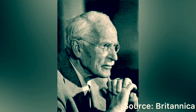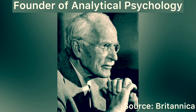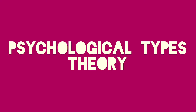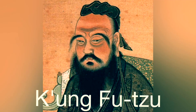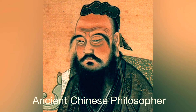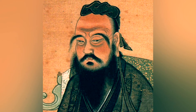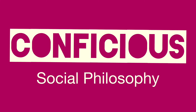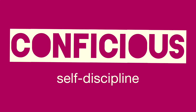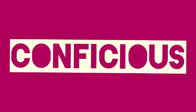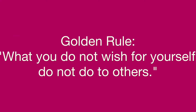Carl Jung. He's the founder of analytical psychology, who developed a theory of psychological types designed to categorize people in terms of various personality patterns. Confucius, also known as Kung Fu Tzu, is an ancient Chinese philosopher whose beliefs and teachings are akin to a religion. His social philosophy was based primarily on the principle of loving others while exercising self-discipline. He believed that loving others could be put into action using the golden rule: what you do not wish for yourself, do not do to others.